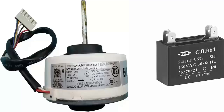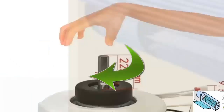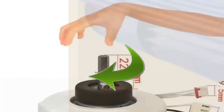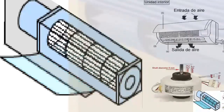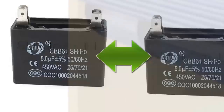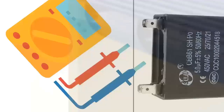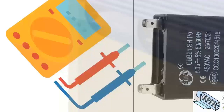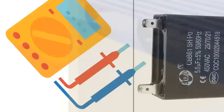1. Capacitor Failure: If the fan emits a humming noise but does not move, try to start it manually. If it starts, the problem is likely the capacitor. Check the capacitance value of the capacitor and test with another capacitor of similar value if available. If there is no replacement capacitor, discharge it electrically and measure its capacitance with a multimeter to verify if it is within normal parameters.